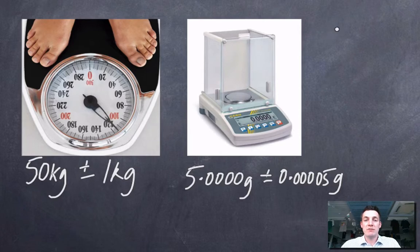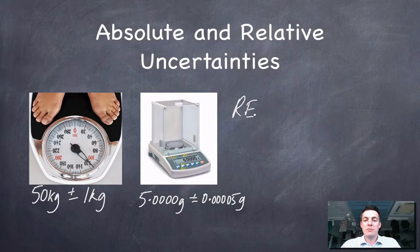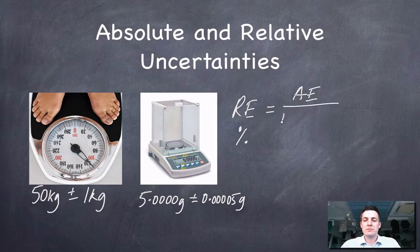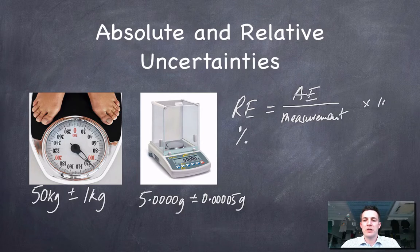How do we find a relative error and how is it different? It's different because it can change in size depending on the size of the reading I've made. The relative error is often quoted as a percentage — it's found by taking the absolute error and dividing it by the actual measurement, then multiplying by 100%.